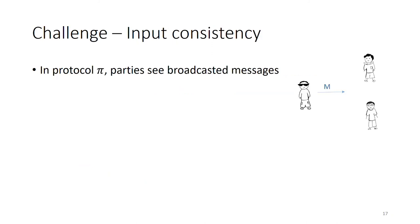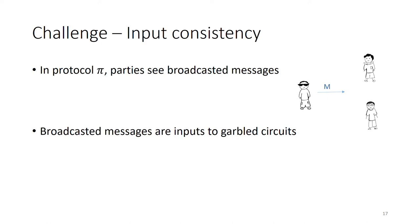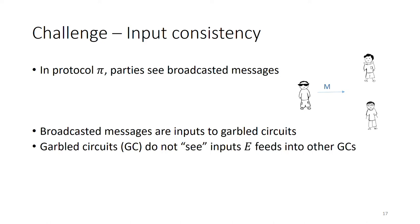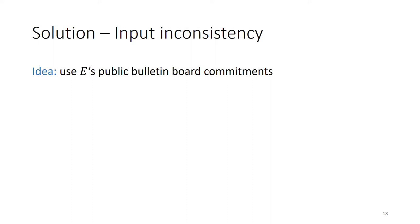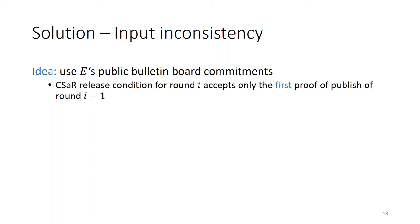Another challenge that we had to overcome in our construction is the issue of input consistency. Note that if, say, Vipul broadcasts a message in the original interactive protocol, both Brian and Ifan see this message. While Vipul's message is part of the input to both Brian's and Ifan's garbled circuits, by itself these circuits cannot verify that the exact same message was used as input to the other circuit as well. So we must somehow prevent a dishonest evaluator from using inconsistent inputs to the garbled circuits. This is again solved using the public bulletin board commitments. Specifically, in the release condition for the garbled circuits and wire keys, we will accept only the very first message published by an evaluator as a commitment to a certain round.